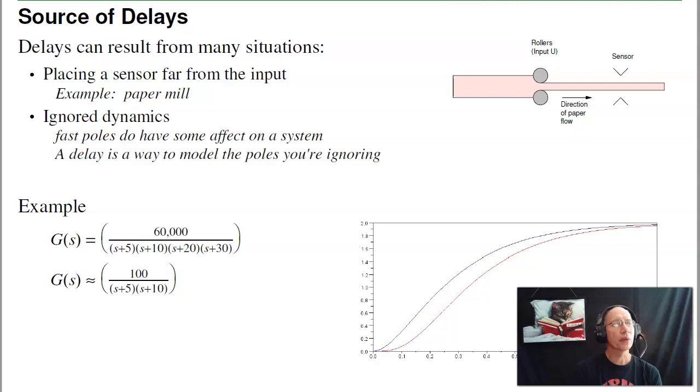There are several ways to get a delay in a system. One is where you place the sensor. For example, in a paper mill with rollers that adjust paper thickness, the measured thickness doesn't show up until the paper passes by the sensors. This is one way you can get a delay.